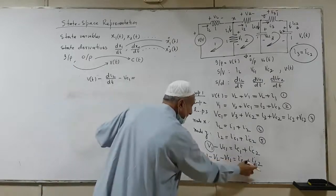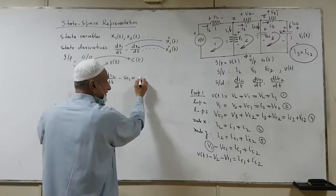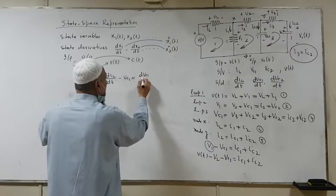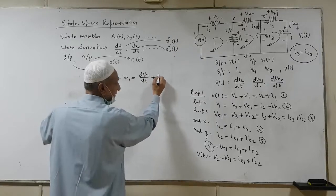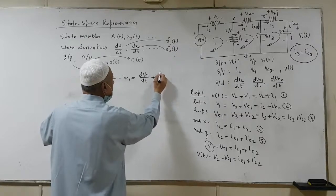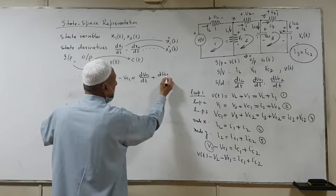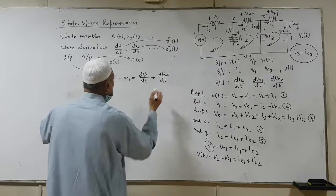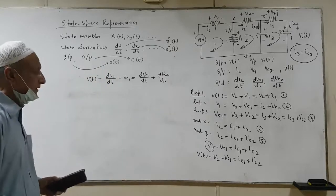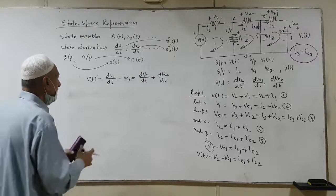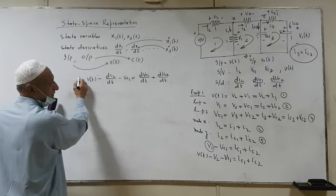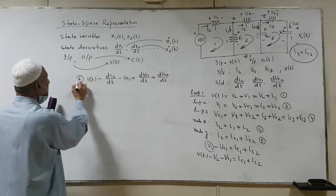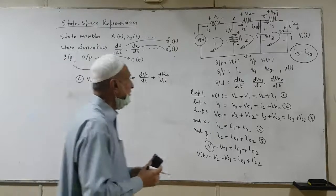Then we have two derivatives over here. Ic1 is c times dVc1 by dt, and then we have Ic2 which is dVc2 by dt. Now, anyhow, we have to manipulate this one. I'll just call this one as equation 6.